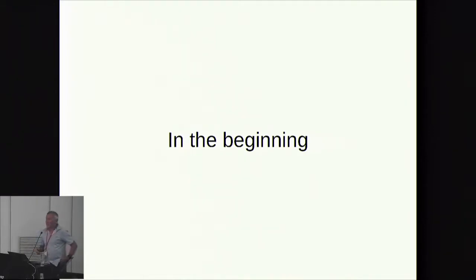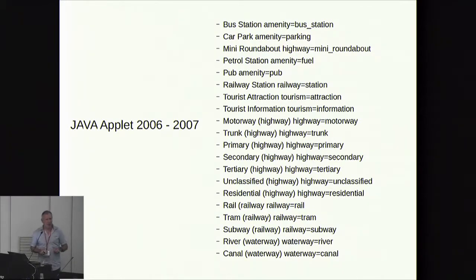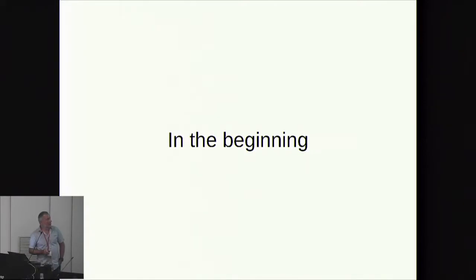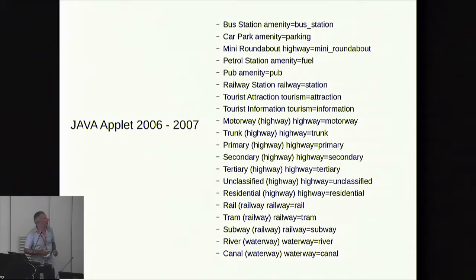In the beginning we had the Java applet as an editor — though there's no clear timeline of editors over the history of OpenStreetMap. There were a handful of other editors around, but it's impossible to tell when they were used or how long they stayed alive. A lot of them were killed off in 2009 when we changed the API to the current version. The people that wrote these editors — at least two of them — are in this room.